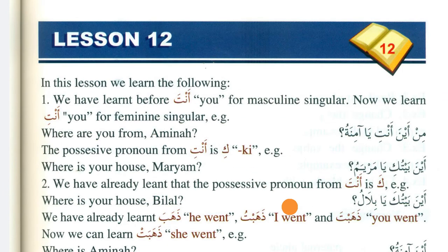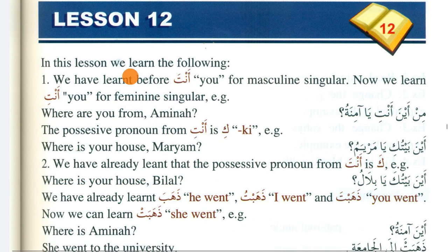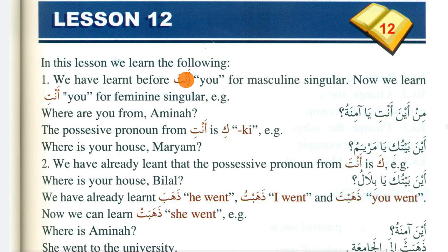Lesson 12. Previously you learned that 'anta' means 'you' and it is for masculine only. Now you will learn 'anti', which is for feminine only - just read through it. You also studied that the possessive pronoun of 'anta' is 'ka'. Now you will learn that the possessive pronoun of 'anti' is 'ki'.